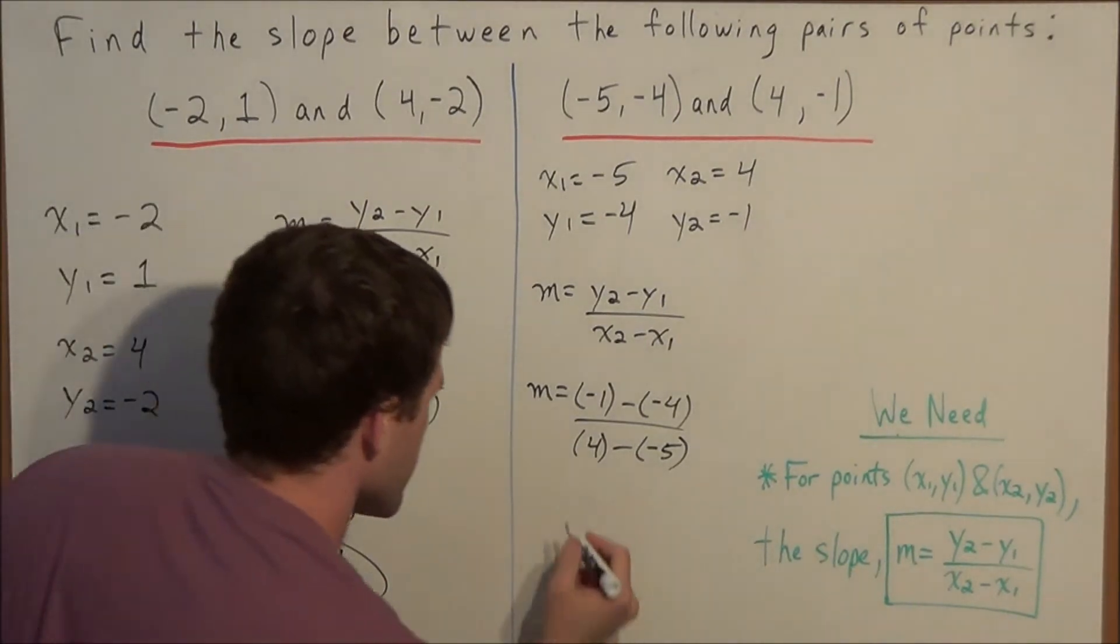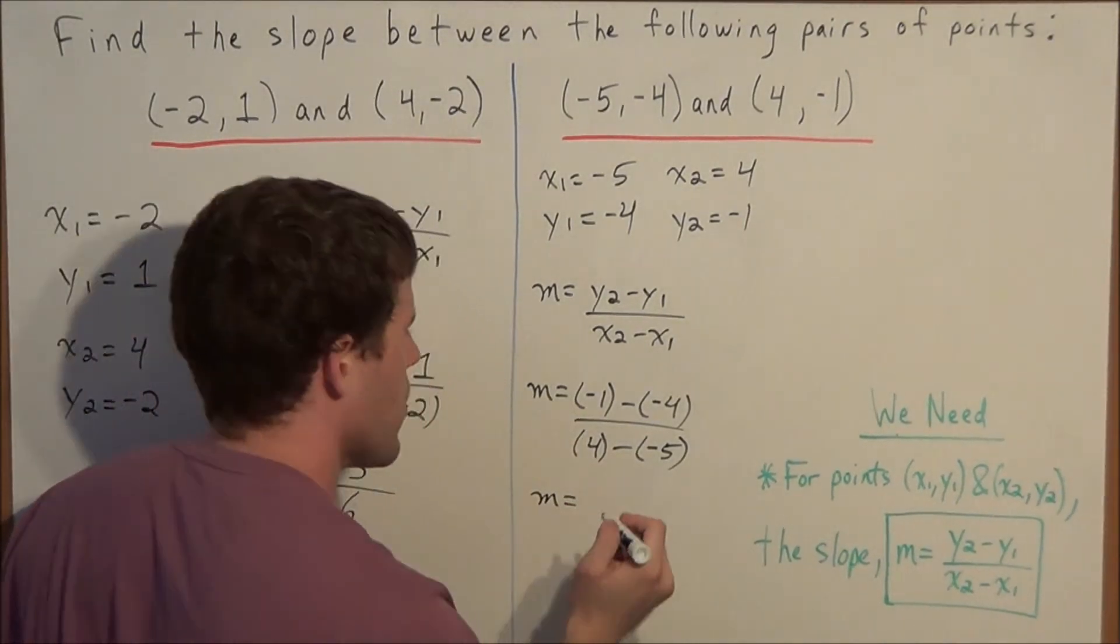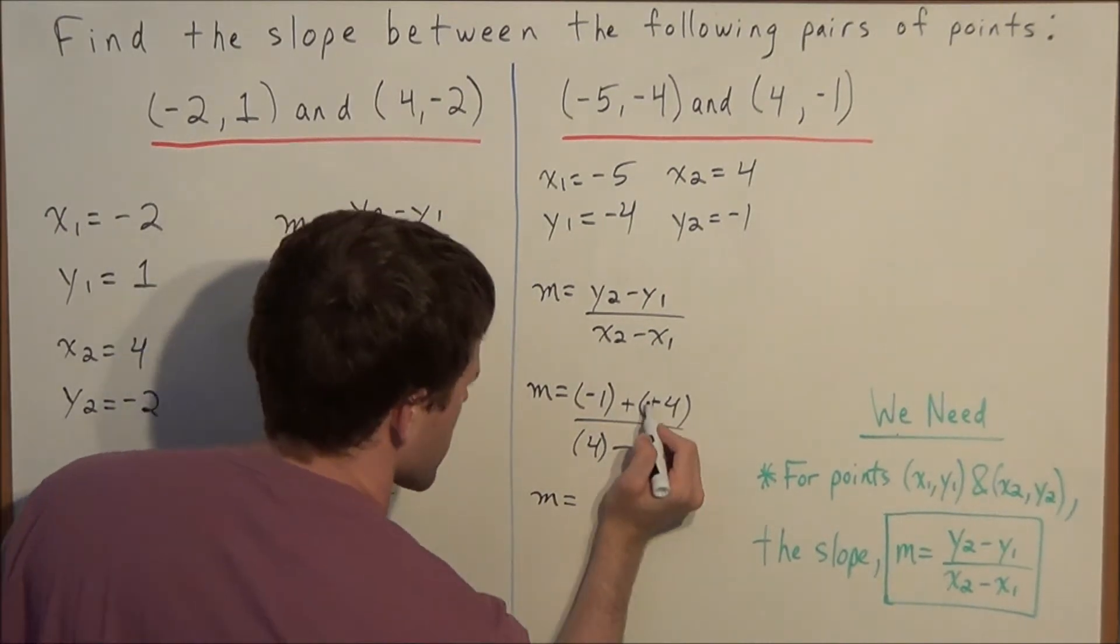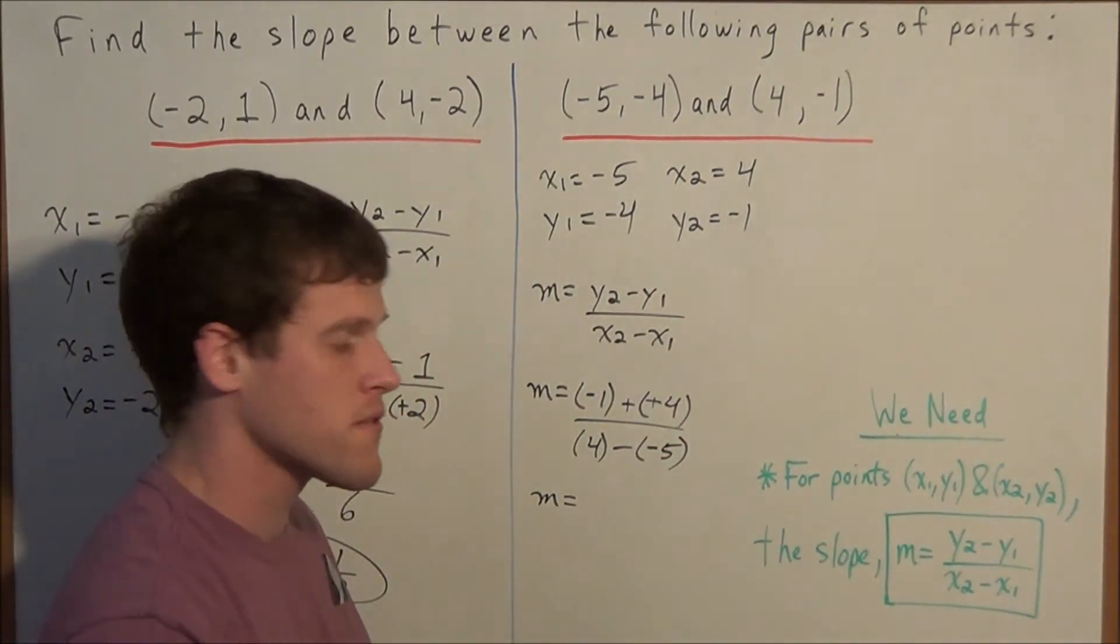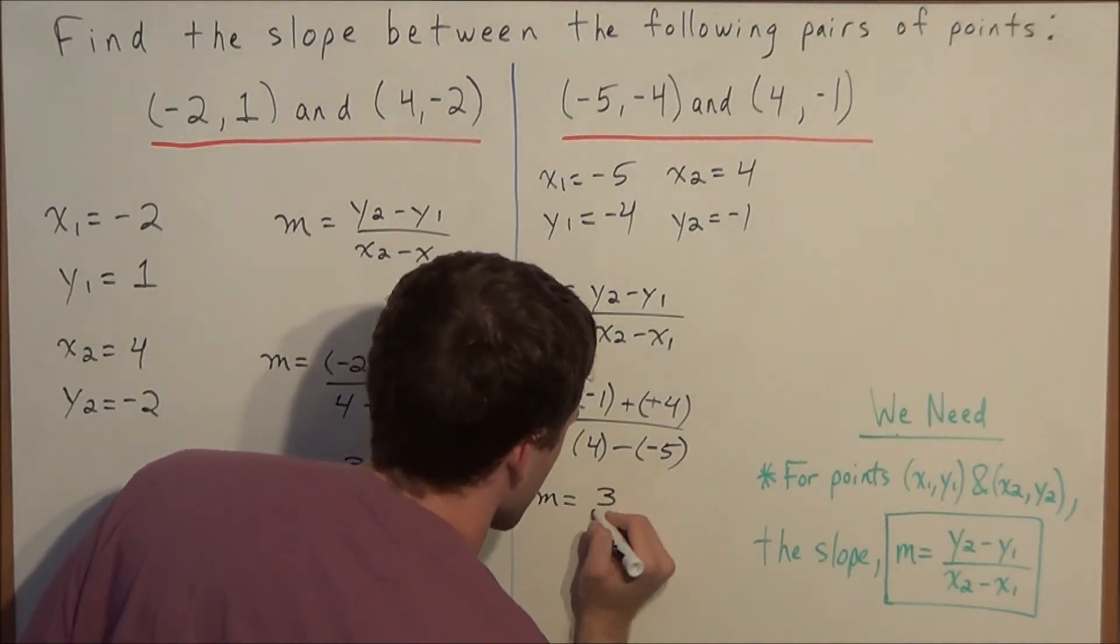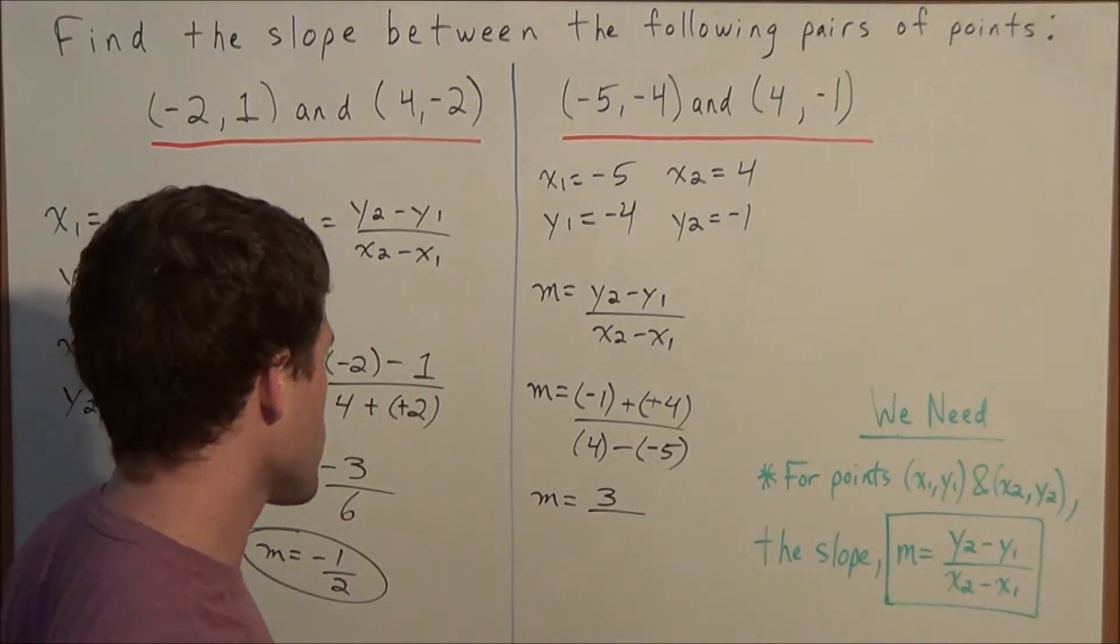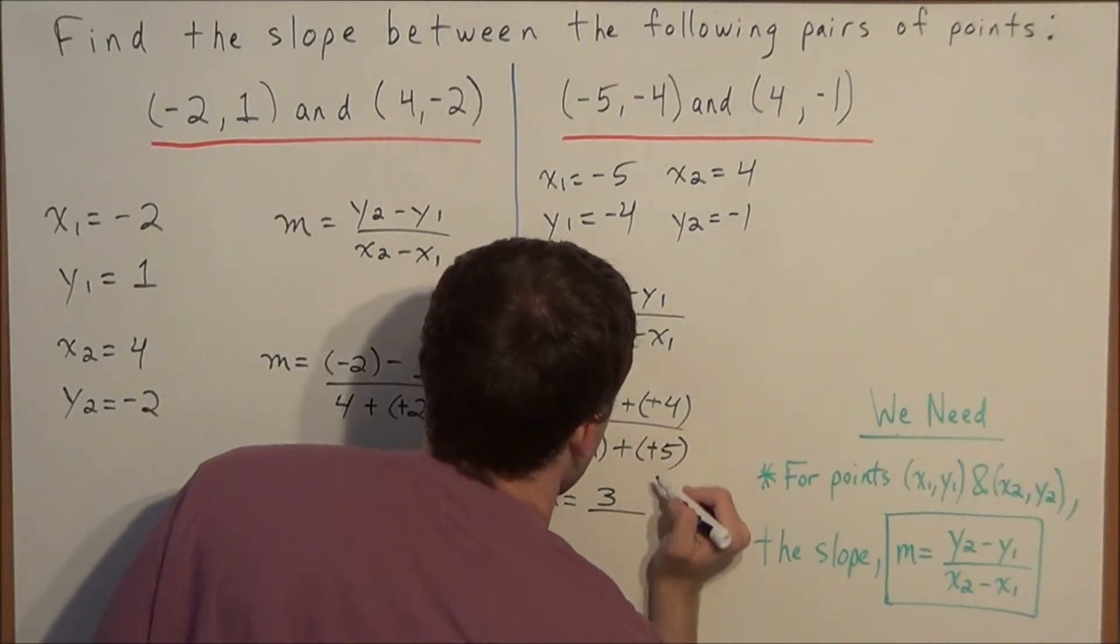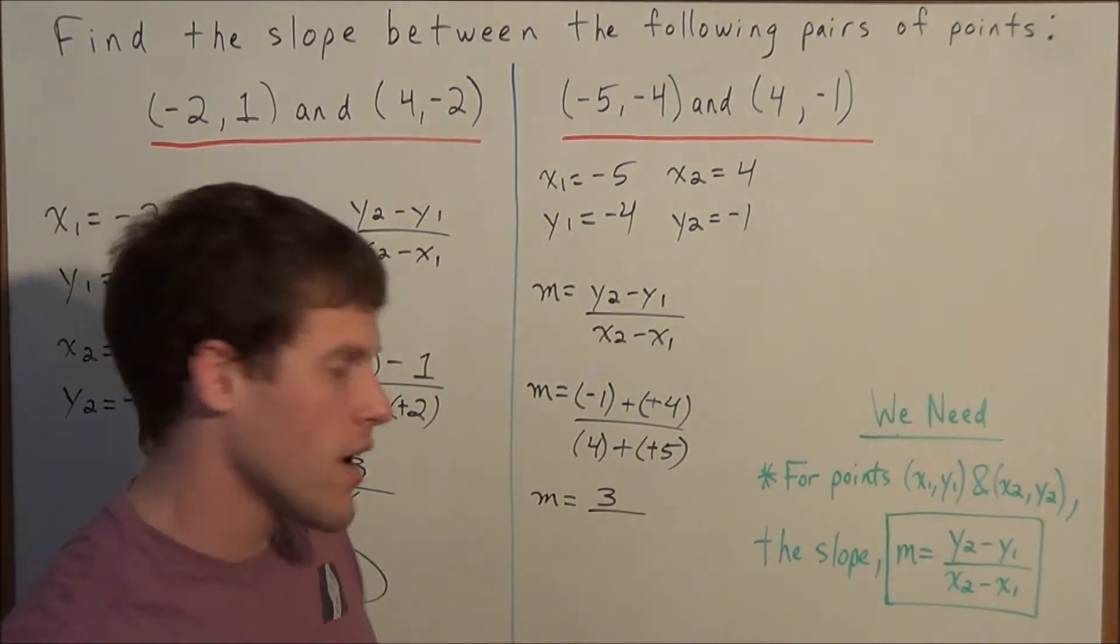So now to simplify, we have negative one minus a negative four. Well we can turn these two minus signs into addition signs, since we're subtracting a negative. And now negative one plus four is a positive three. So we have three over, and now four minus a negative five. This turns into an addition problem, and we have four plus five is nine.